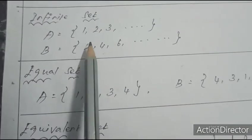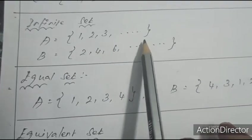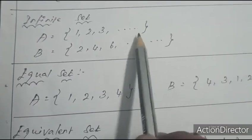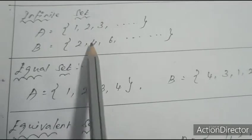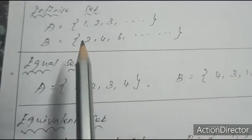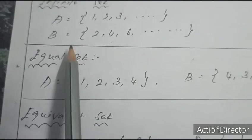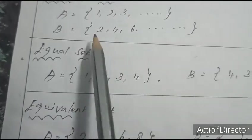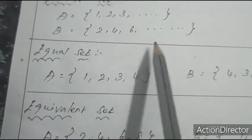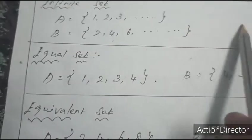A = {1, 2, 3, ...} — it is not a finite set; it has infinite elements, therefore it is an infinite set. The set of natural numbers. B = {2, 4, 6, ...} — the set of even numbers; it has an infinite number of elements, so it is an infinite set.